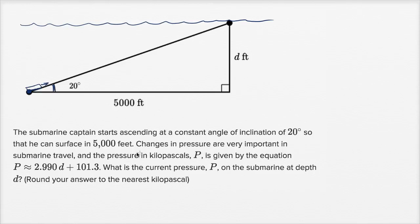Changes in pressure are very important in submarine travel, and the pressure in kilopascals is given by the equation: the pressure in kilopascals is approximately 2.990 times your depth in feet plus 101.3. What is the current pressure P on the submarine at depth D? Round your answer to the nearest kilopascal.